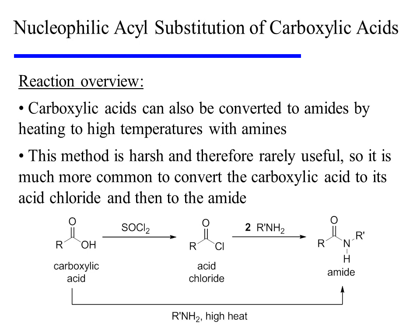Carboxylic acids can also be converted to amides. One method for doing this is heating at high temperatures with amines. However, this method is harsh and therefore rarely useful. So it is much more common to convert the carboxylic acid to its acid chloride through treatment with thionyl chloride, and then to the amide through treatment with an amine.